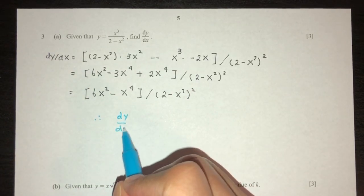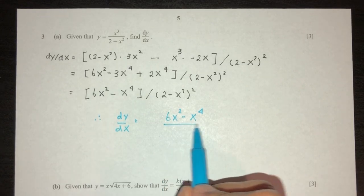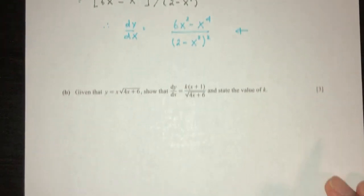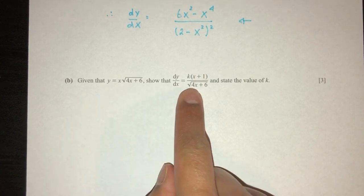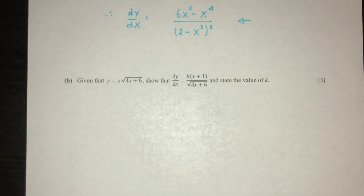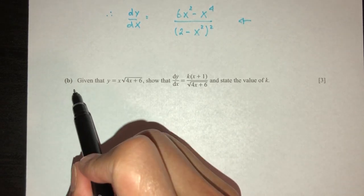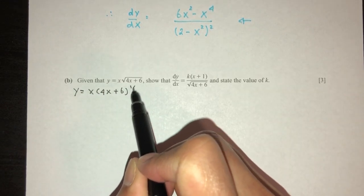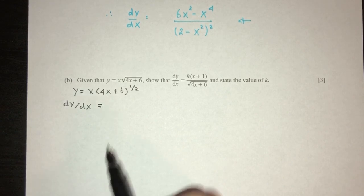Simplifying further: dy/dx = (6x² − x⁴) / (2 − x²)². That is your answer for part a. For part b, given y equals this expression, find dy/dx in the given form and state the value of k. The key insight is that square root is the same as power one-half. So rewrite y as x times (4x + 6)^(1/2).